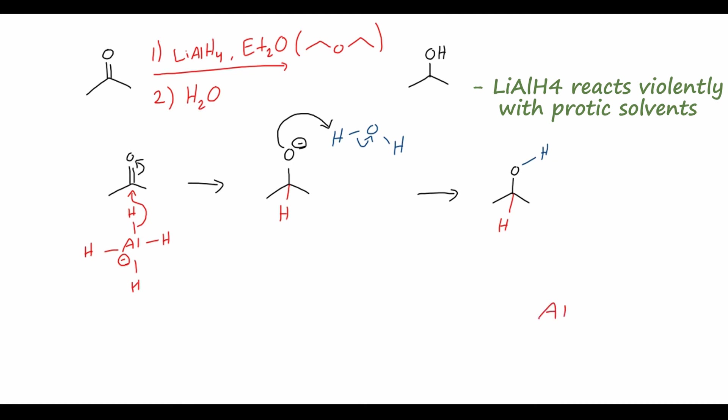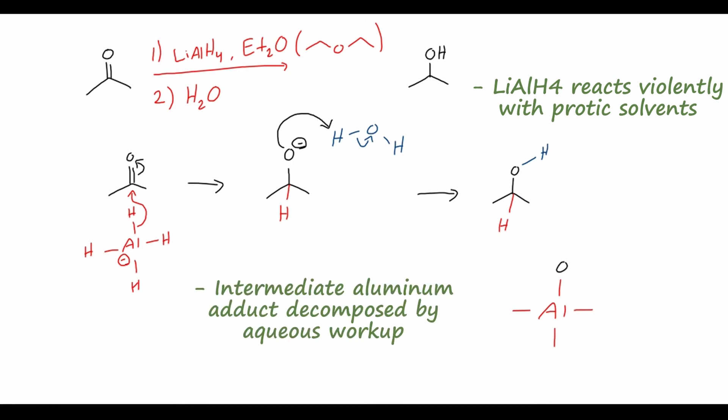One final important note is that the mechanism I've drawn is a little simplified. This reaction with aluminum hydride actually proceeds through an intermediate where we have an aluminum center with four bonds to the OR groups from the alcohol intermediates after the first reduction step. It is actually this intermediate that gets decomposed by water in the aqueous quenching step. Although you don't necessarily need to draw this out on an exam, it is something to take note of. That is one way to synthesize alcohols from carbonyl compounds using organometallic reducing agents.